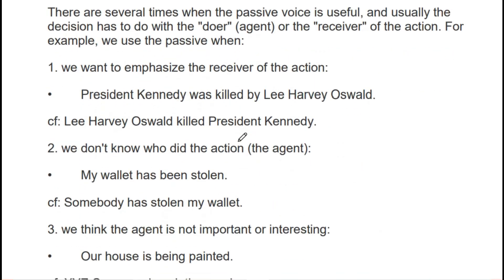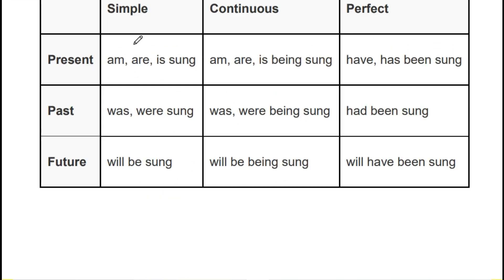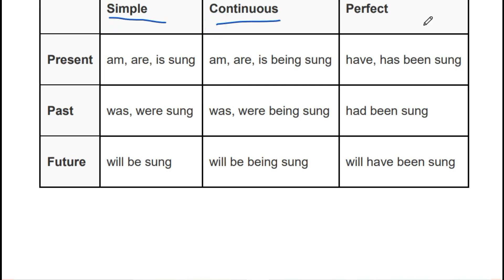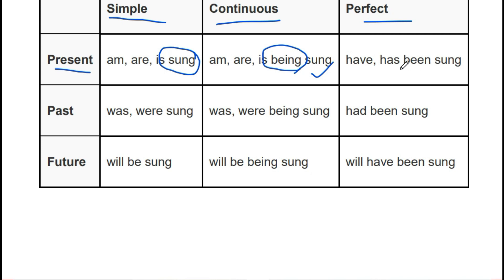Here is the proper list you can make in your notebook to remember. Simple becomes simple; continuous becomes continuous; perfect becomes perfect. For changes: simple present uses 'is/am/are' plus the third form. If you encounter a continuous tense, 'being' is added before the third form. For simple past, 'was/were' is added with the third form. For past continuous, 'being' is added after 'was/were.'